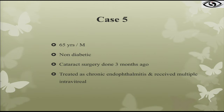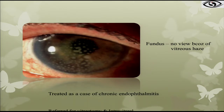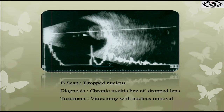Case 5: a non-diabetic patient who had cataract surgery three months ago was diagnosed with chronic endophthalmitis and received multiple intravitreal injections elsewhere, then referred to us for vitrectomy. On B-scan, he had a biconvex presentation — this was probably a nucleus drop. The surgeon had not done B-scans for this patient, who was incorrectly receiving intravitreal antibiotics. We performed vitrectomy without intravitreal antibiotics. This illustrates the importance of B-scan whenever you have media opacity and cannot visualize clearly.